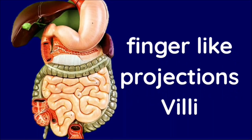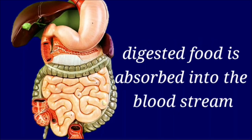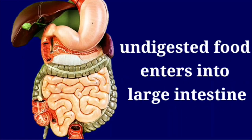The small intestine contains finger-like projections called villi on its inner surface. These are highly entangled with blood capillaries and lined with a single layer of epithelial cells. Hence, the digested food is easily absorbed into the bloodstream, from which it is supplied to all body parts.